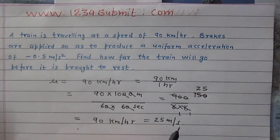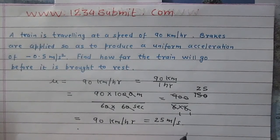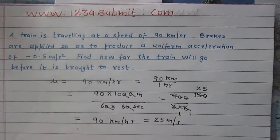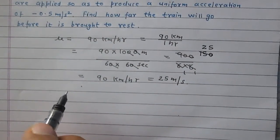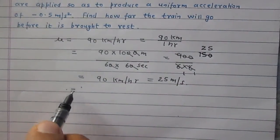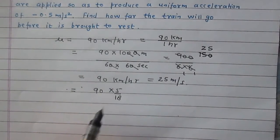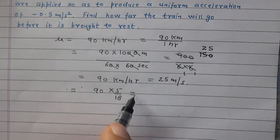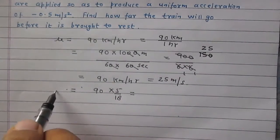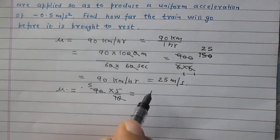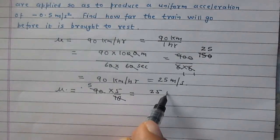So 90 kilometer per hour is simply 25 meter per second. This is one way to convert kilometer per hour into meter per second. There is a shortcut method also. You will have to simply multiply 90 with 5 by 18 and you will get the value of velocity in meter per second directly.